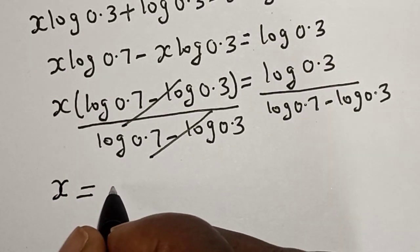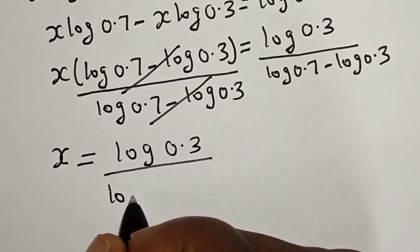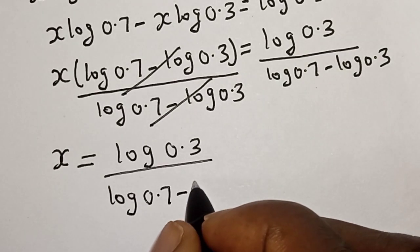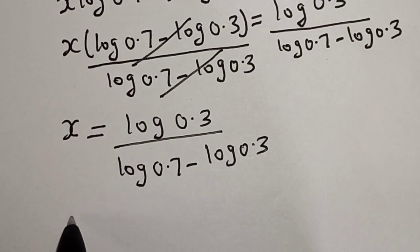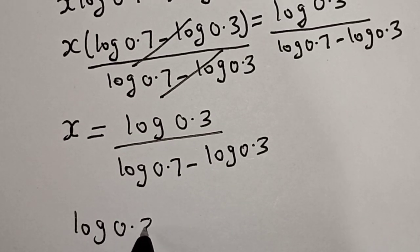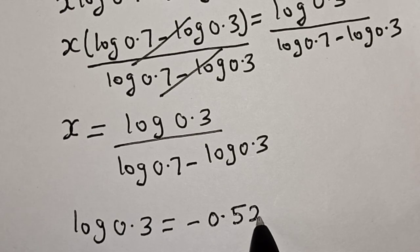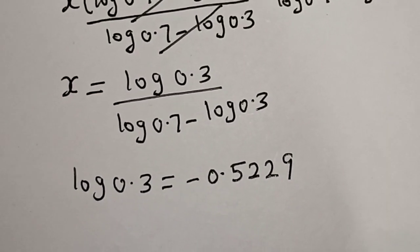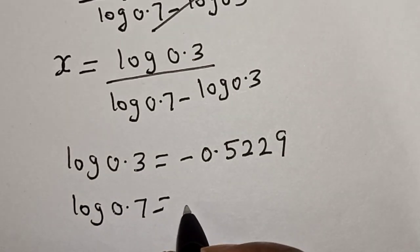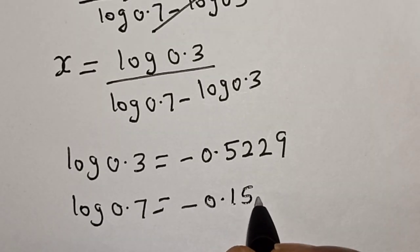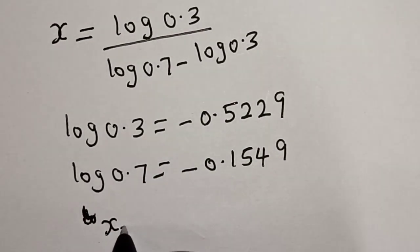So s is equal to log 0.3 divided by (log 0.7 minus log 0.3). Now substituting values: log 0.3 is equal to minus 0.5229, and log 0.7 is equal to minus 0.1549. Let's substitute these back.